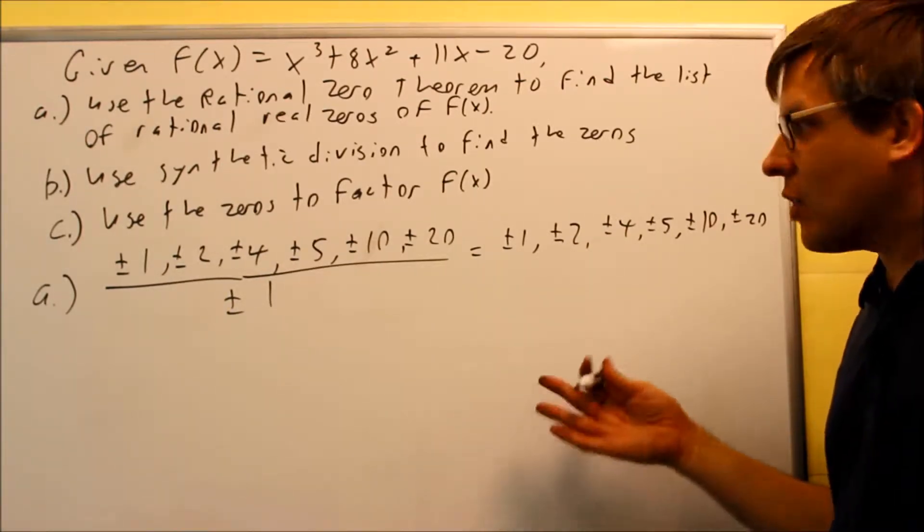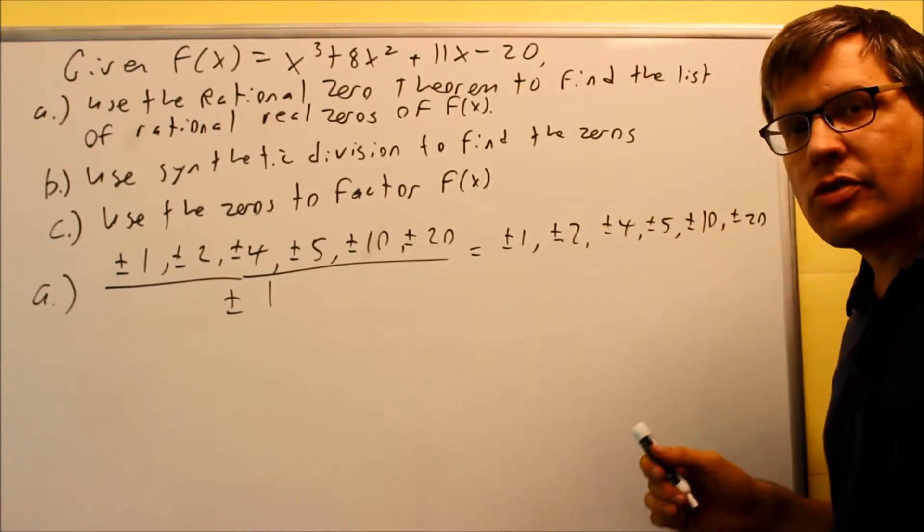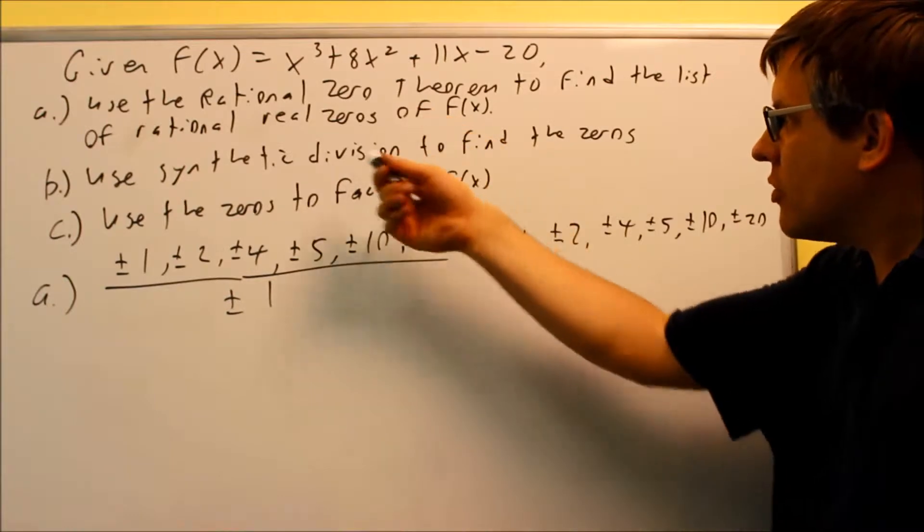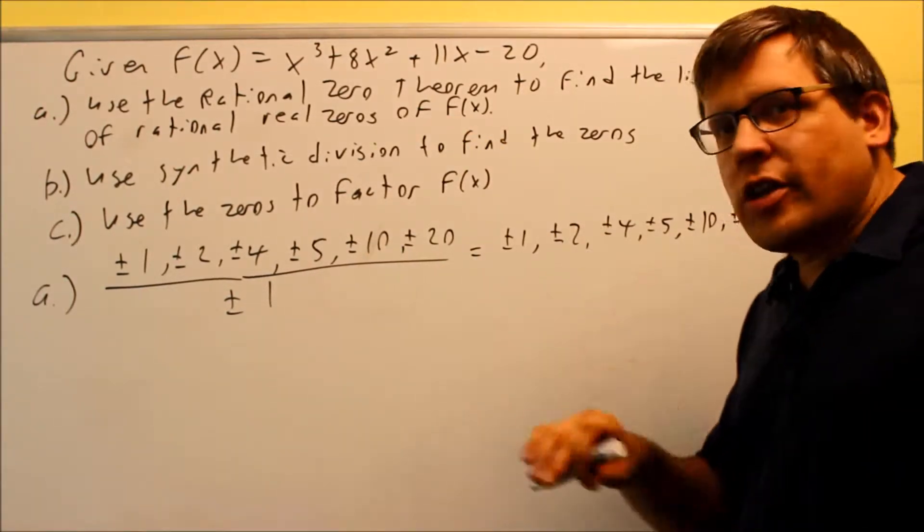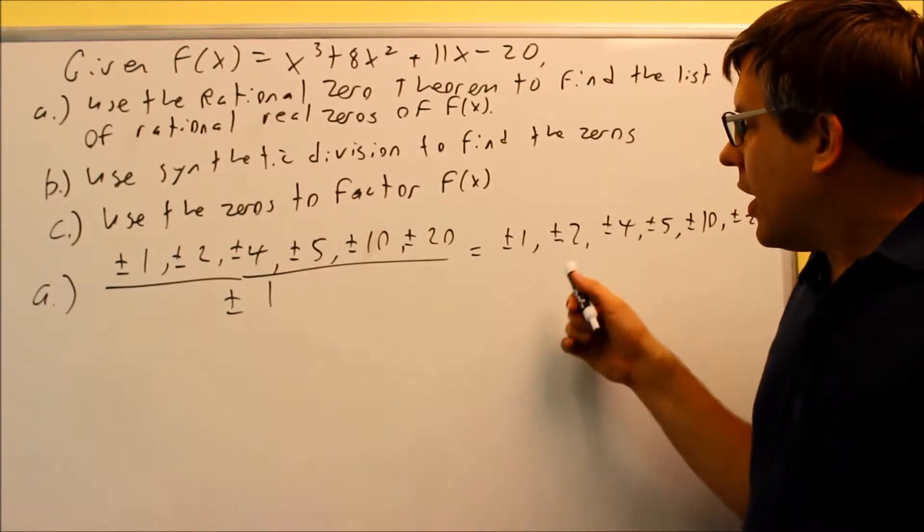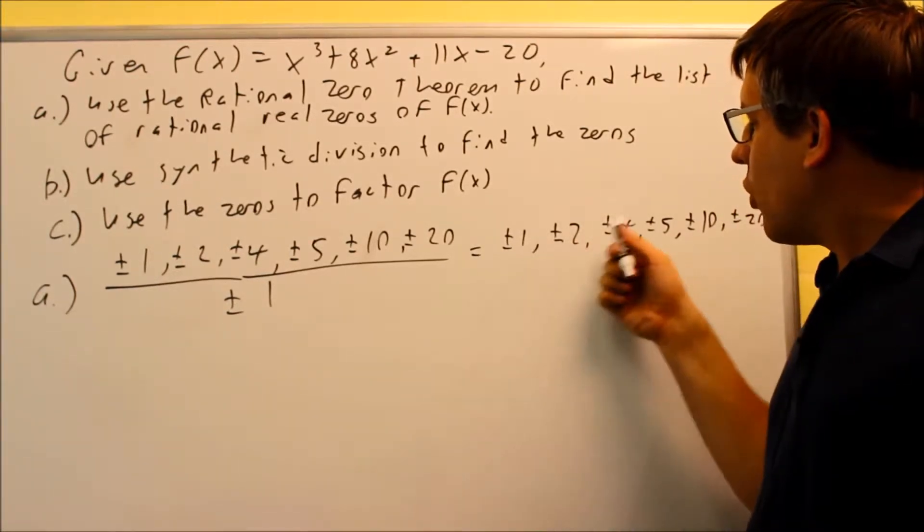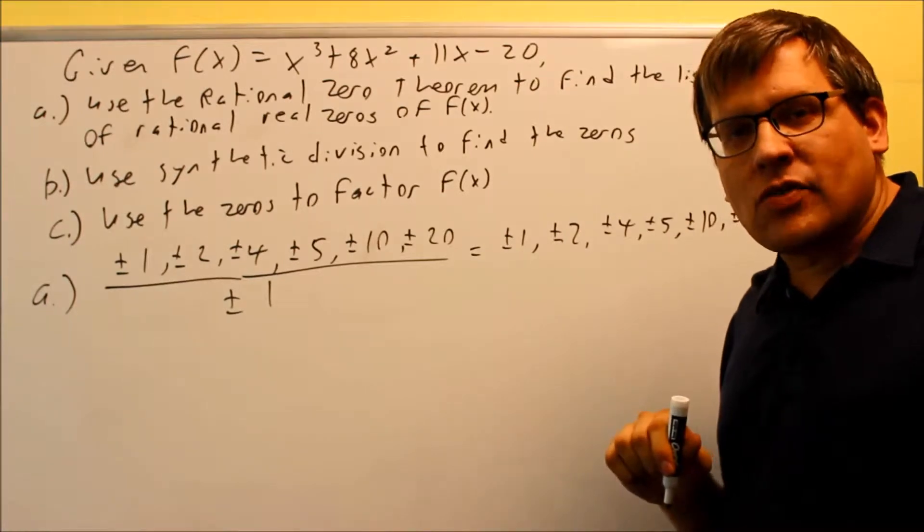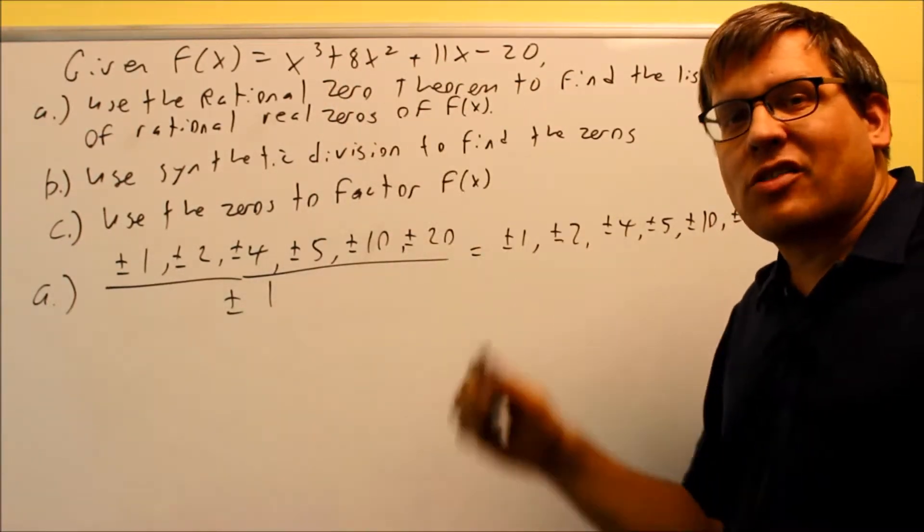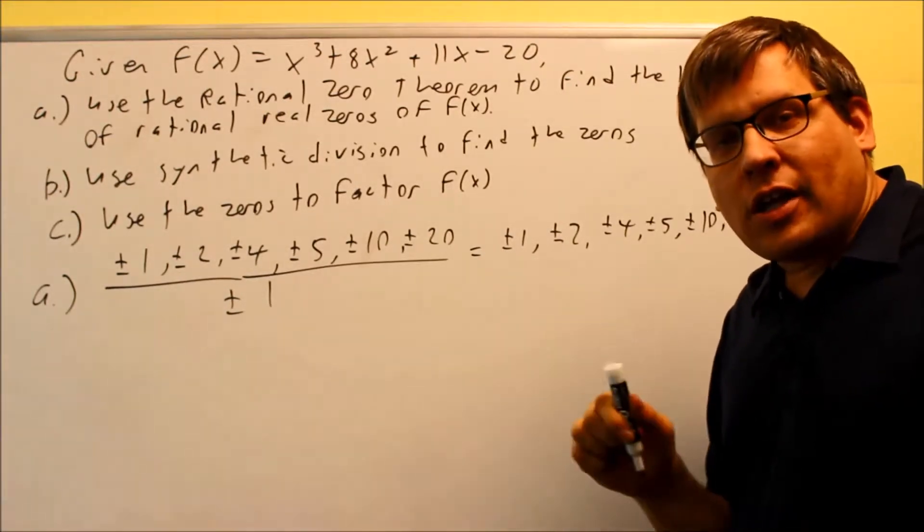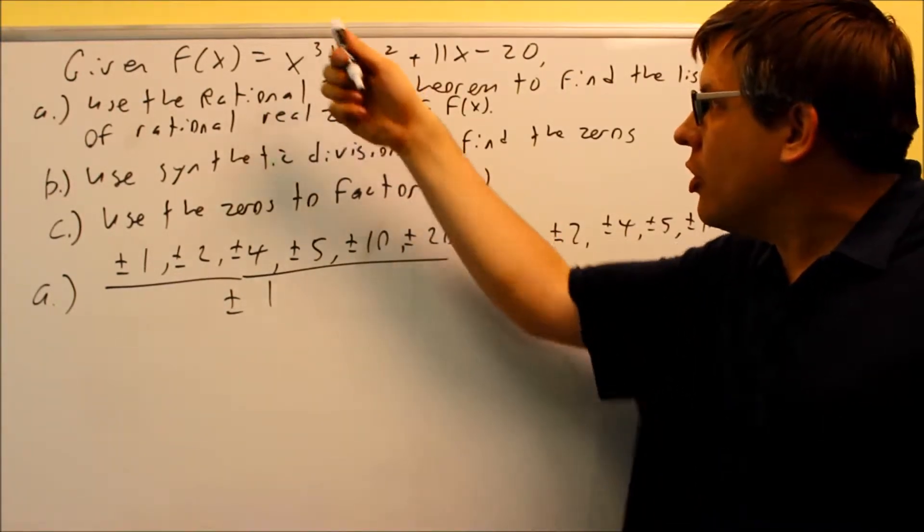So what I have to do now is I have to figure out what the actual number is and the way we do that is by using synthetic division. So the way that the text shows is they show trying every single one of these until you find one that gives a zero and then we can use that to bring it down to a quadratic.